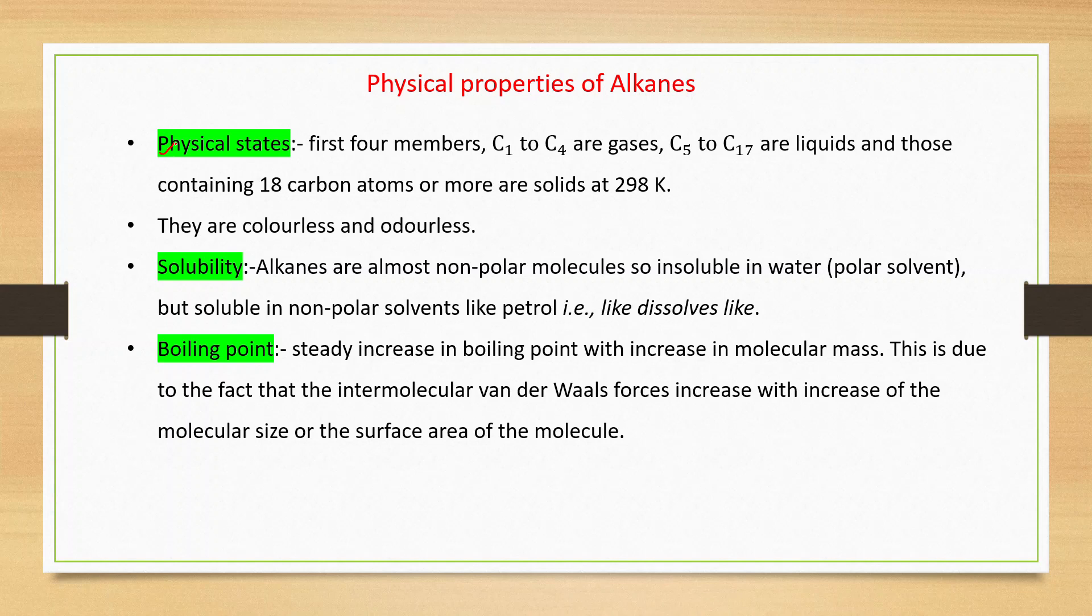On that basis, the first four members, C₁ to C₄, are gases. C₅ to C₁₇ are liquids, and those containing 18 carbon atoms or more are solids at 298 Kelvin. They are colorless and odorless.